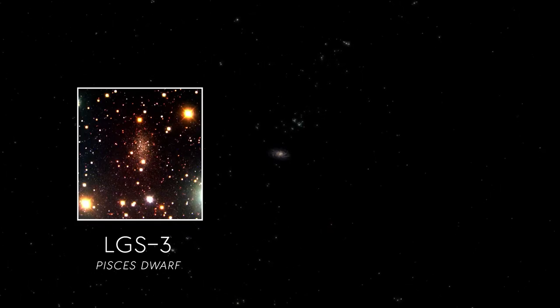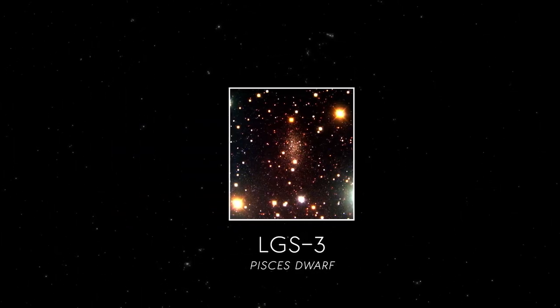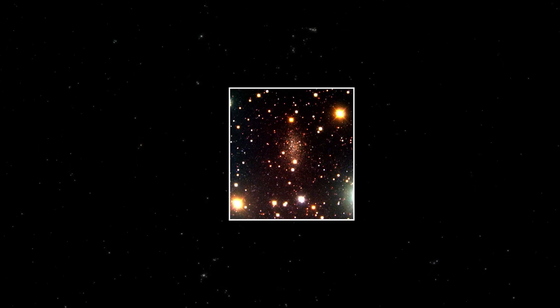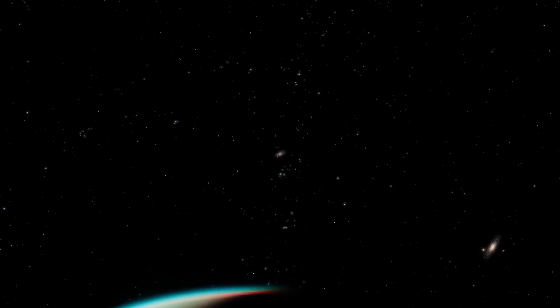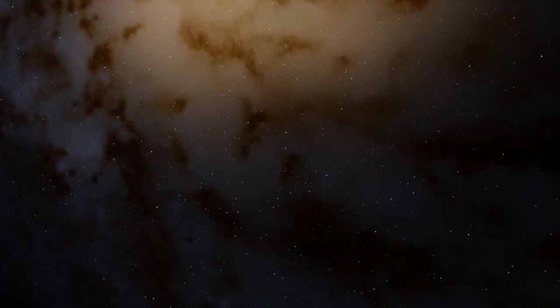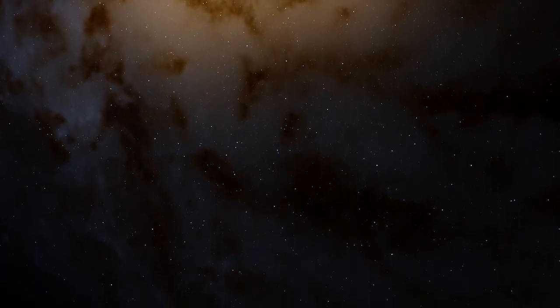With a distance of approximately 3 million light-years from Earth, Messier 33 is considered a relatively close galactic neighbor. Its proximity provides astronomers with an excellent opportunity to study the intricate details of its structure and formation.